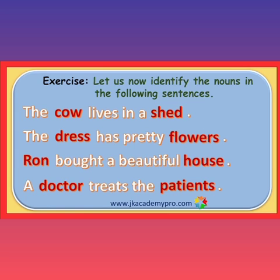Now we have one more exercise. Let us identify the nouns in the following sentences. There are four sentences. First sentence: 'The cow lives in a shade.' Cow comes in the animals category, and shade is a place where the cow lives. Second sentence: 'The dress has pretty flowers.' Dress is a thing, and flowers is also a thing.